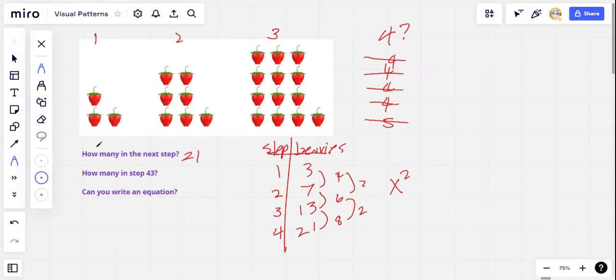I think the way I'm going to approach this is to try to draw an x squared, a step number squared in each step. So one squared would just be one strawberry. So that's actually, let me do this. Let me put it up here. One squared there. And then two squared, that would be this two by two square of berries. And then step three squared would be this square of berries. And then what's left over is, well, two and then three and then four, which looks like it's the step number plus one.